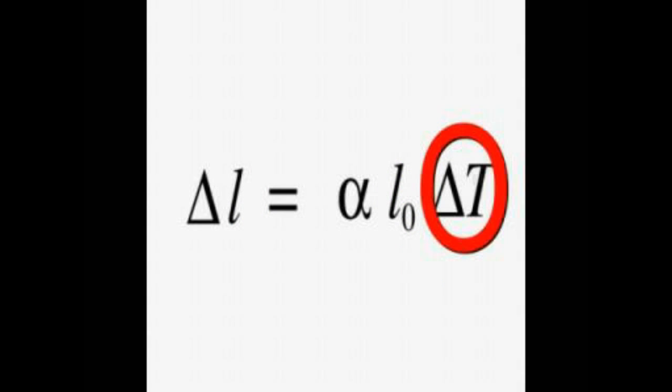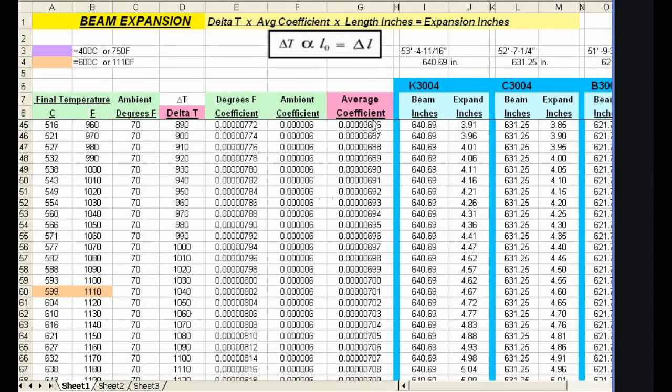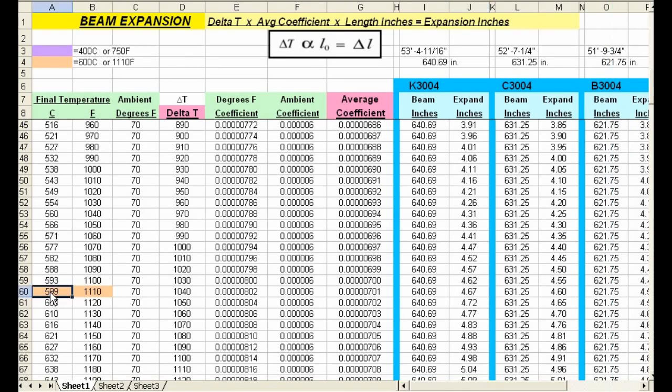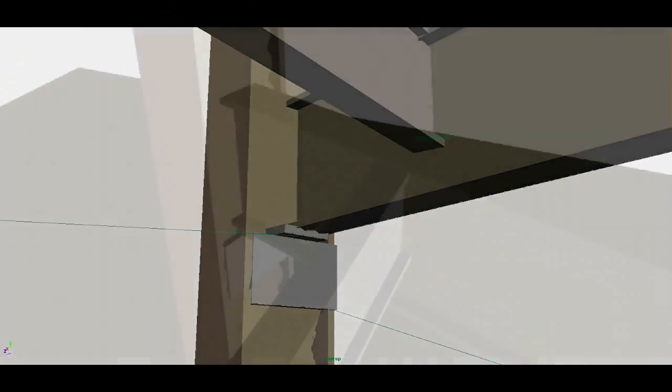Also, delta T should be the change in temperature experienced by the steel and not the final temperature reached. And thirdly, the figure used to calculate the coefficient should be an average temperature. Once these factors are considered, a more modest figure of around 4.6 inches is attained for the maximum expansion in these beams. This alone would prevent the girder failing due to expansion.